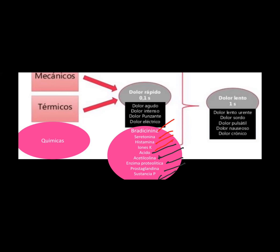Estas sustancias favorecen la sensibilidad de las terminaciones para el dolor. Todas las hacen de manera directa, excepto las dos últimas —prostaglandinas y sustancia P— que no activan de manera directa, pero sí inician la secuencia para estimular las fibras del dolor. La bradicinina es el principal exponente y la sustancia más dolorosa. Lo que se hace con los analgésicos es tratar de evitar que se libere más bradicinina.